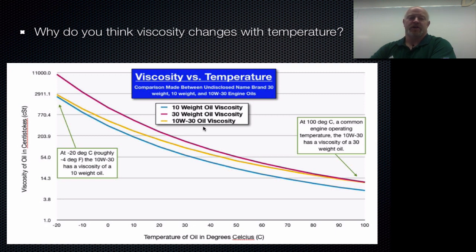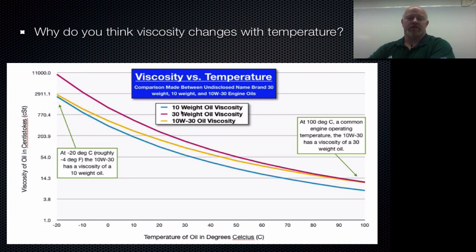Those numbers tell you viscosity based on temperature. They measure viscosity from the lowest operating temperature — about negative 20 degrees Celsius for a really cold starting engine — up to about the boiling point of water, which is close to the operating temperature of a car. Cars usually run around 200 to 250 degrees Fahrenheit, just above 100 degrees Celsius. The 10 weight oil has a lower viscosity than 30 weight, so 30 weight is more viscous and flows less freely than 10 weight.